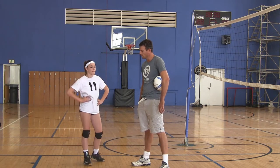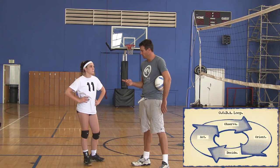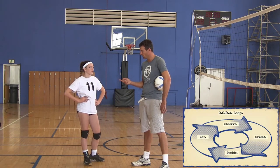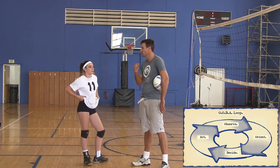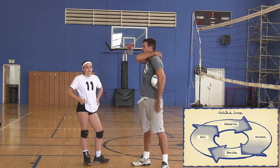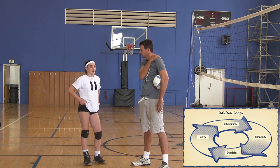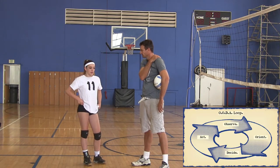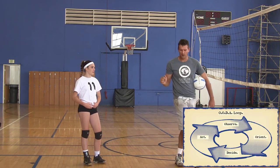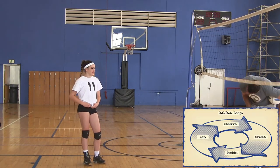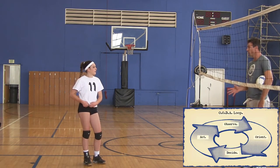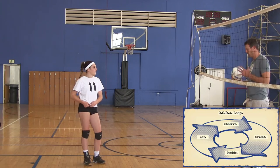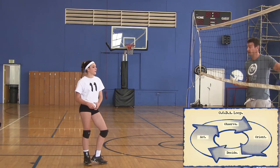So the OODA loop is O-O-D-A. First, we have to Observe. So what are we observing? The game — like how the other team is blocking. That's good. So you're observing because your goal is to spike, so you have to observe the other team's block and maybe the other team's defense.